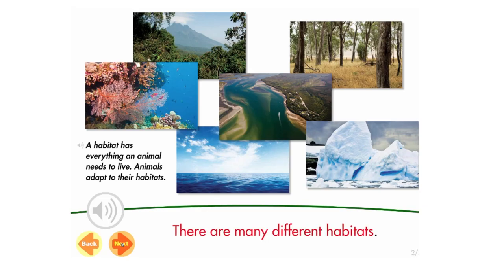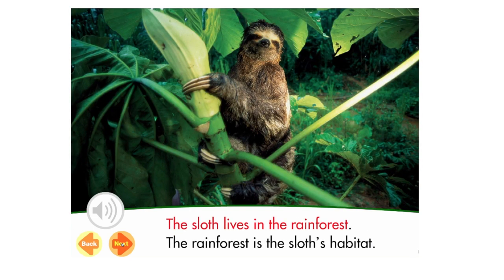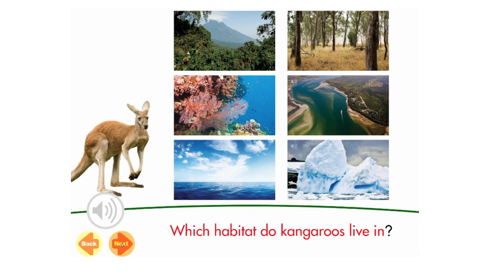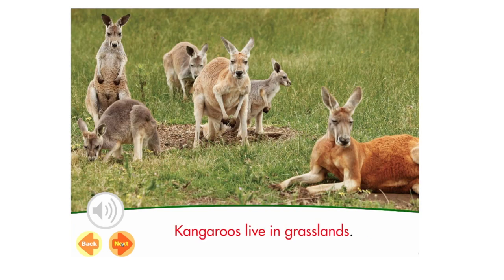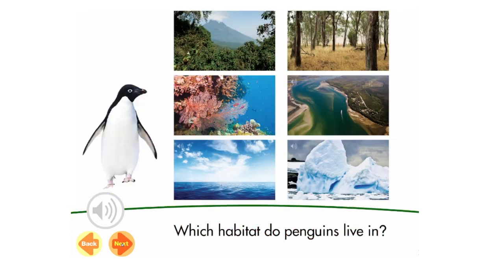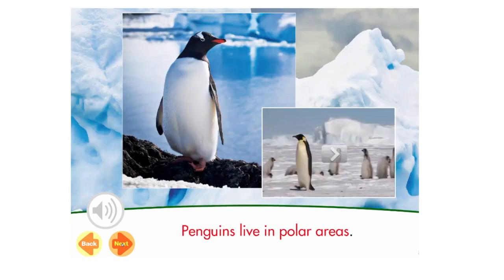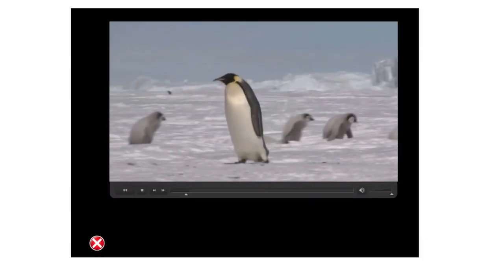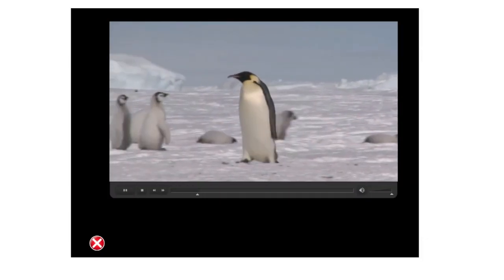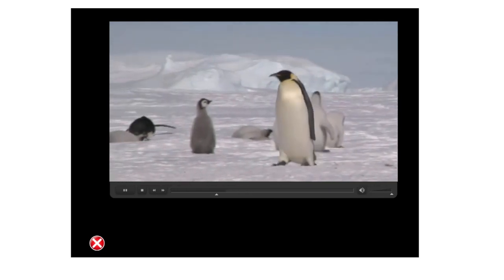There are many different habitats. The sloth lives in the rainforest — the rainforest is the sloth's habitat. Which habitat do kangaroos live in? Kangaroos live in grasslands. Which habitat do penguins live in? Many of the non-fiction e-books feature embedded video clips to support and extend students' understanding.